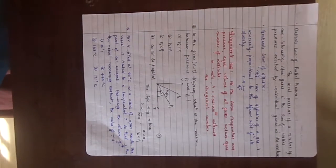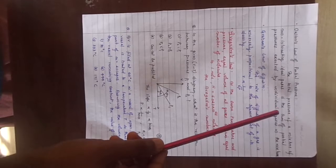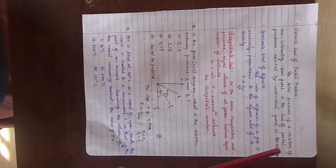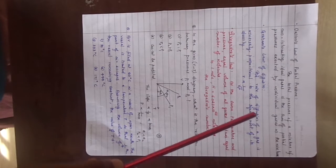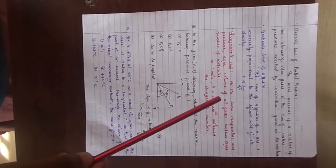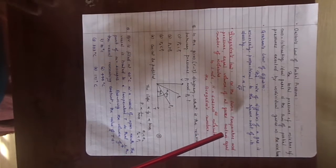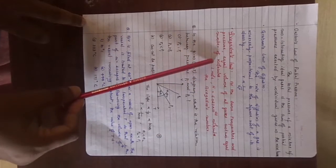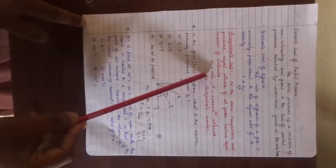Dalton's law of partial pressures: the total pressure of a mixture of non-interacting ideal gases is the sum of the partial pressures exerted by the individual gases in the mixture. Graham's law of diffusion: the rate of diffusion of a gas is inversely proportional to the square root of its density, that is R proportional to 1 by root rho. Avogadro's law: at the same temperature and pressure, equal volumes of all gases contain equal number of molecules. One mole contains the Avogadro number of 6.023 into 10 raised to 23 molecules.